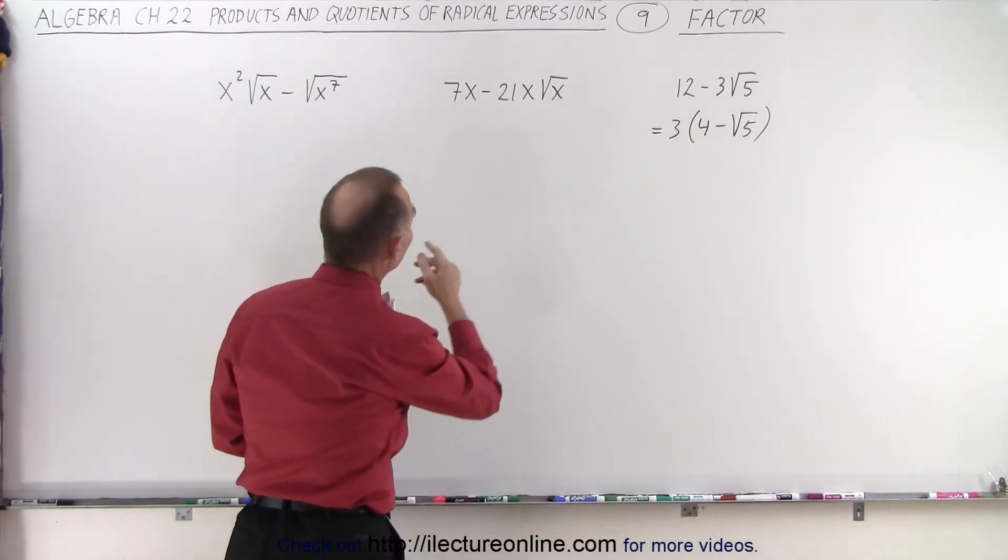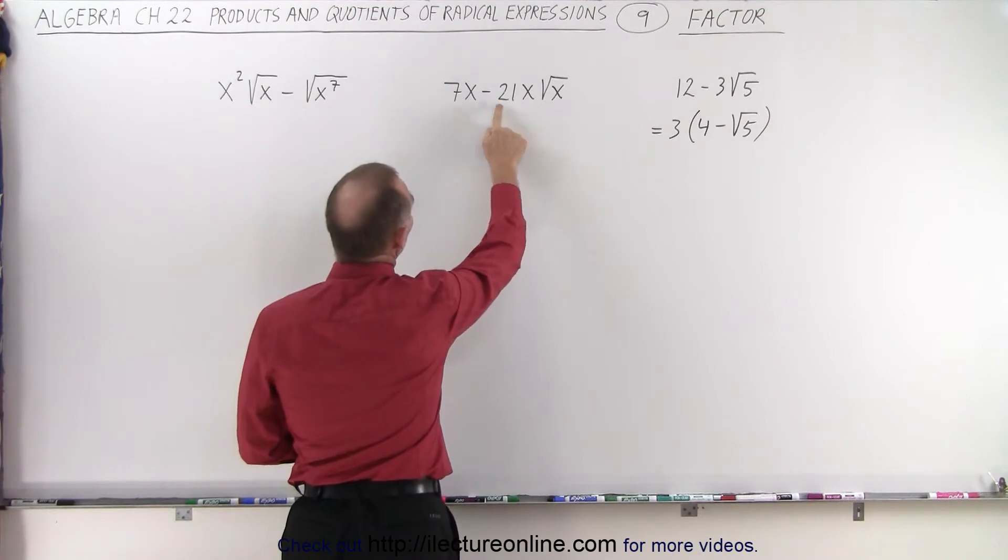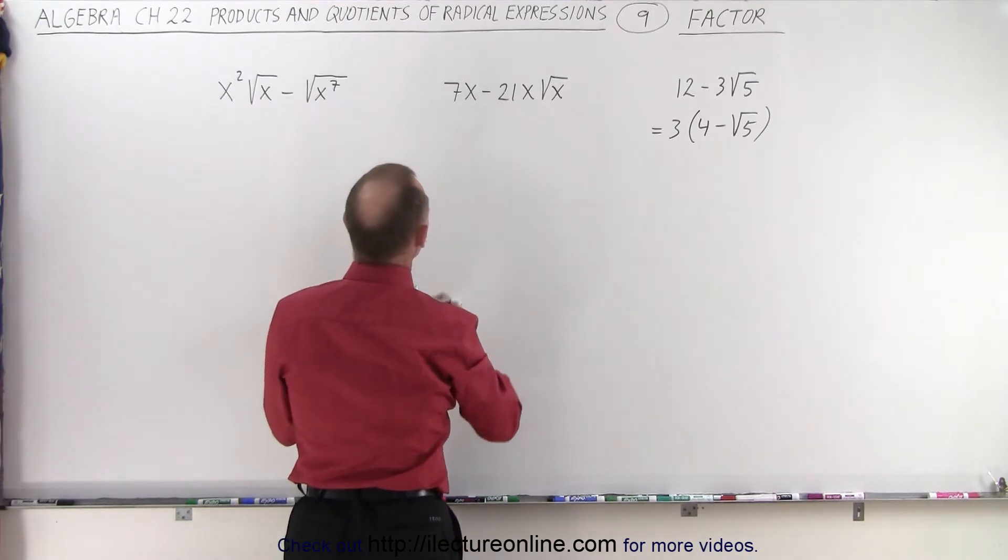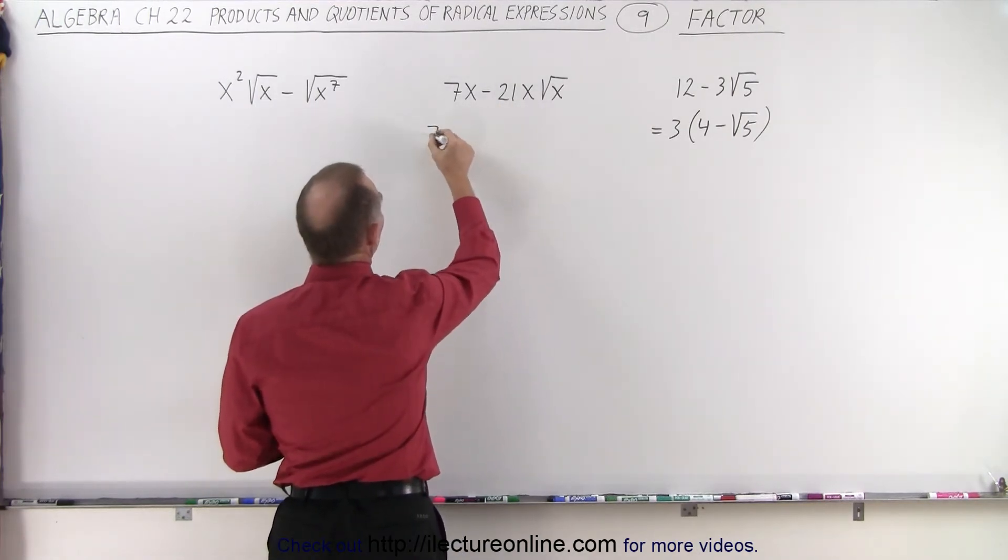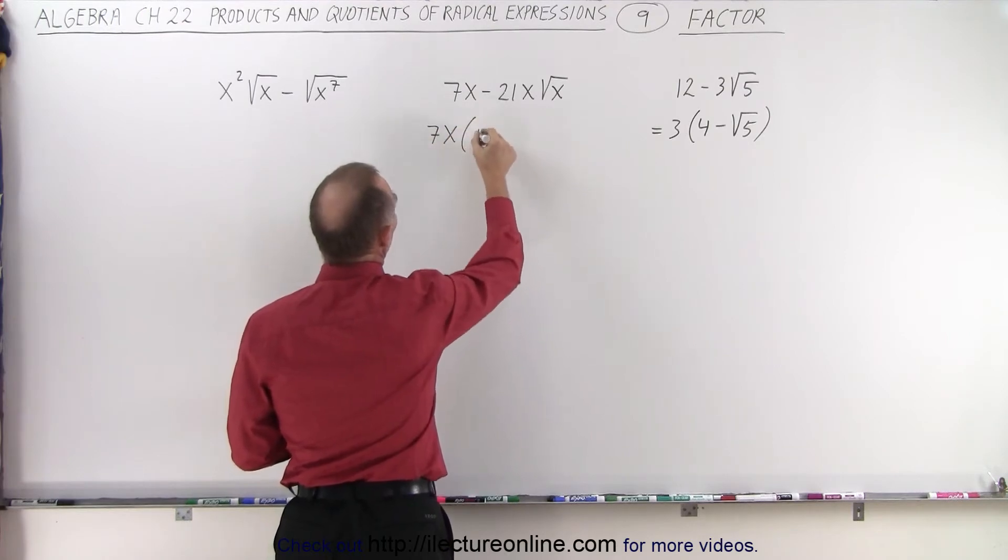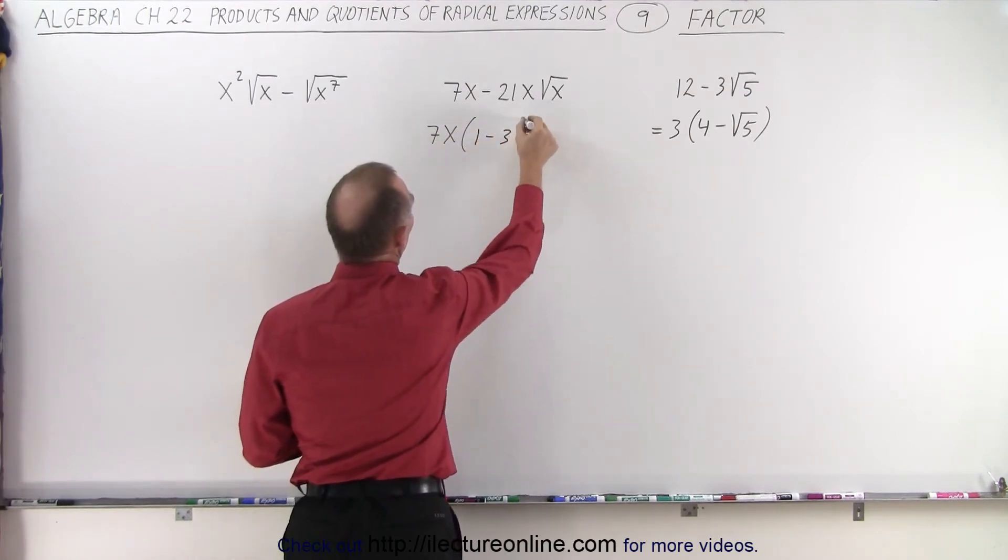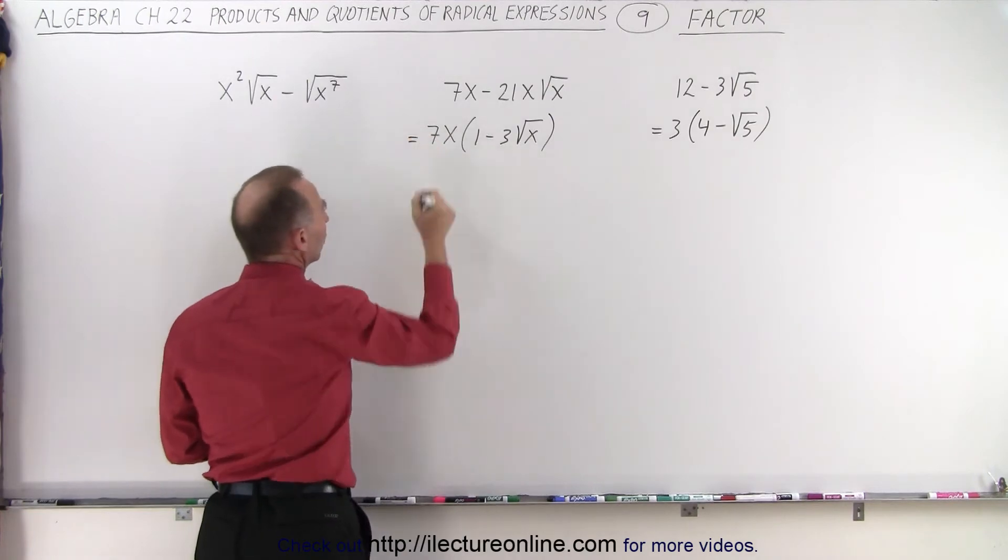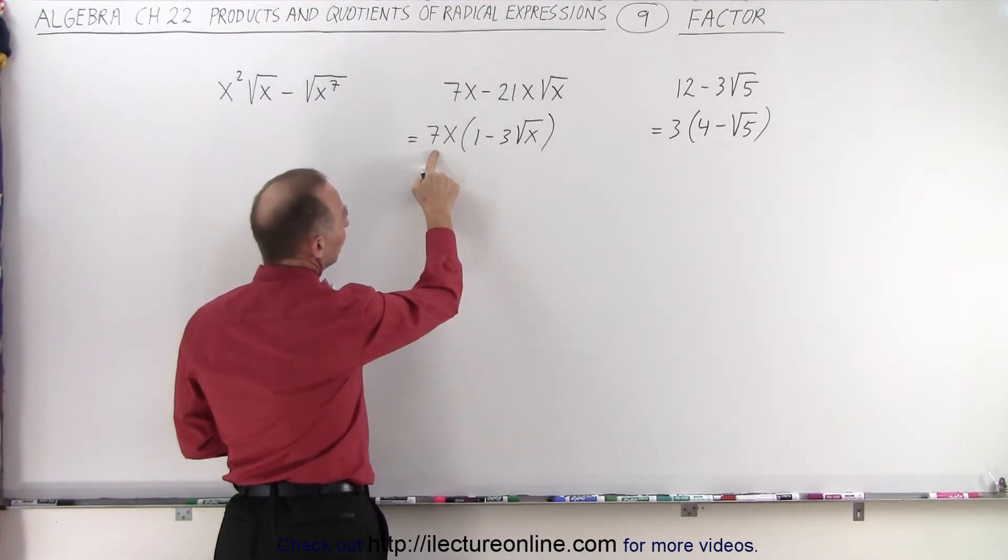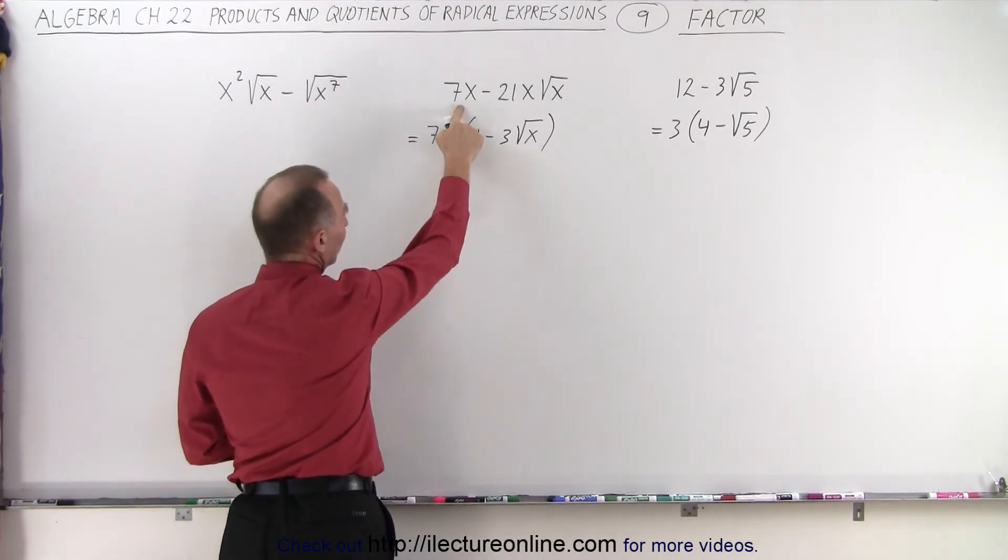Over here, notice that 7 is common, and so is the x. So here we can go ahead and factor out the 7 times x, which leaves us with 1 minus 3 times the square root of x. And again, to make sure that we did it correctly, notice we multiply this back.